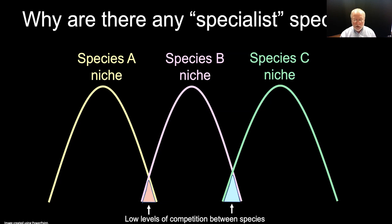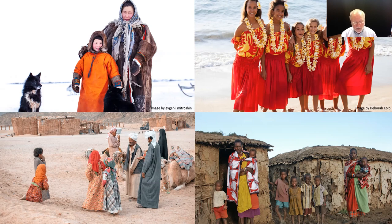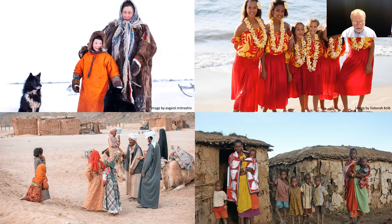Understanding this concept is essential to understand how human populations are causing the extinction of other species. There has never been a more populous generalist species than Homo sapiens. Modern humans have only existed on the Earth for about 200,000 years, but in that time they have migrated and moved across the globe, becoming the most ubiquitous animal species to ever exist on the planet. We can live in snowy climates, in tropical climates, in mountainous climates. We can live in deserts, in swamps, in grasslands, and in forests.